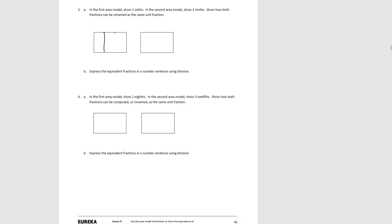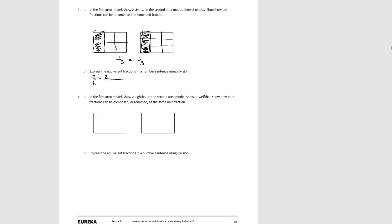So here, if we divide the first one into sixths and shade two sixths, and the second one we divide into ninths and shade three ninths, we can see with our area model that these are both in the larger units equal to one third. Do B. For the first one, if we have two sixths and we divide each of the numerator and the denominator by two, we end up with one third. And in the second area model, we started with three ninths, and if we divide both the numerator and the denominator by three, we also end up with one third.